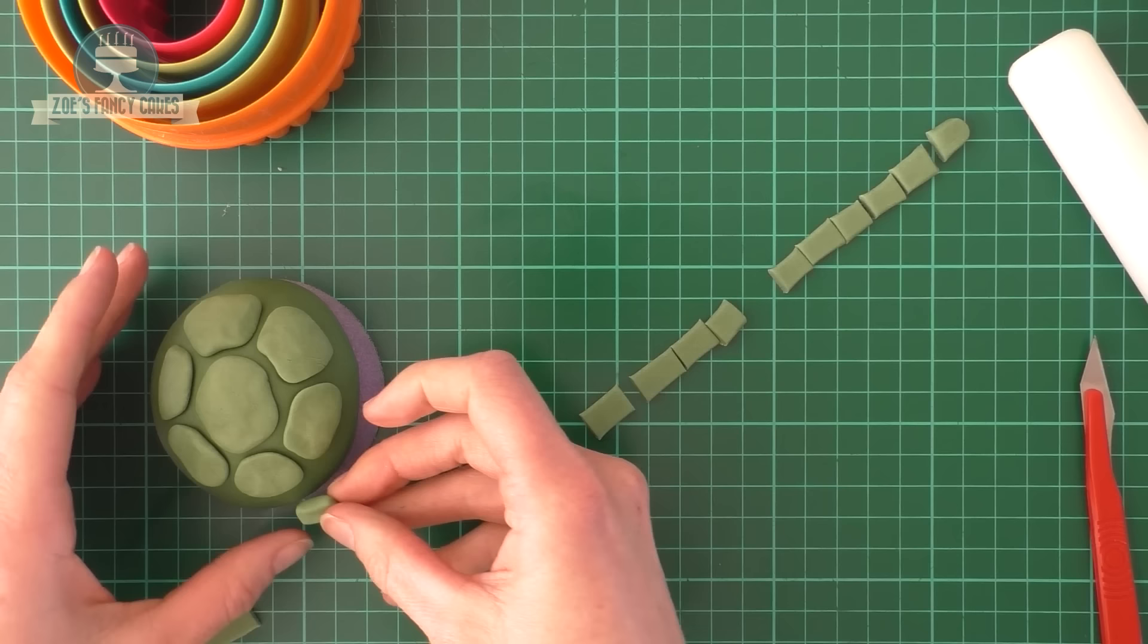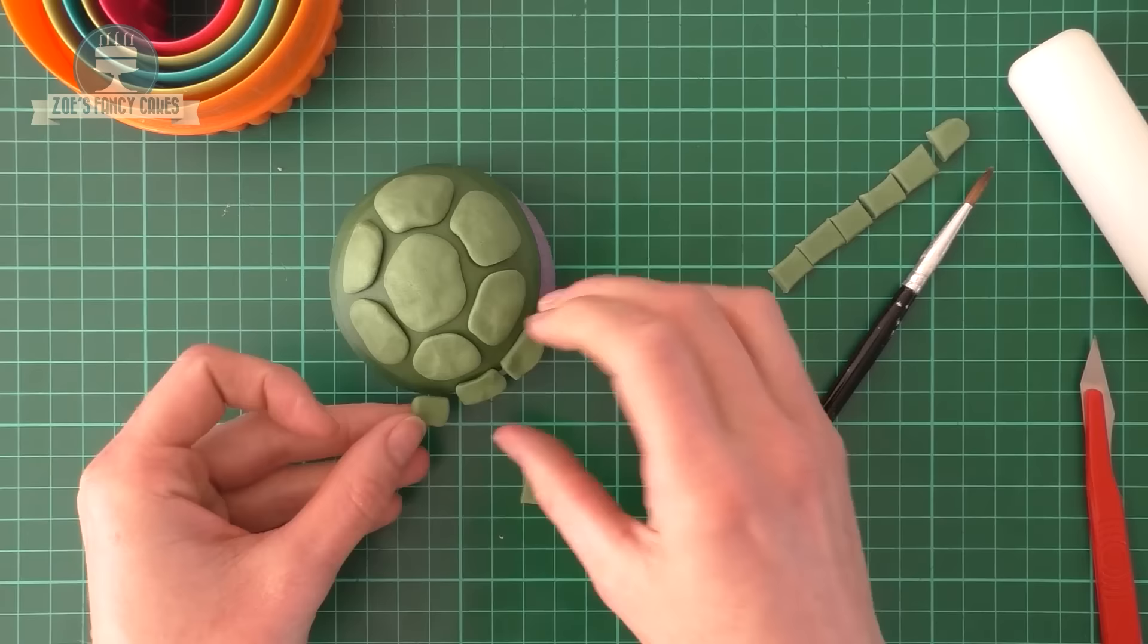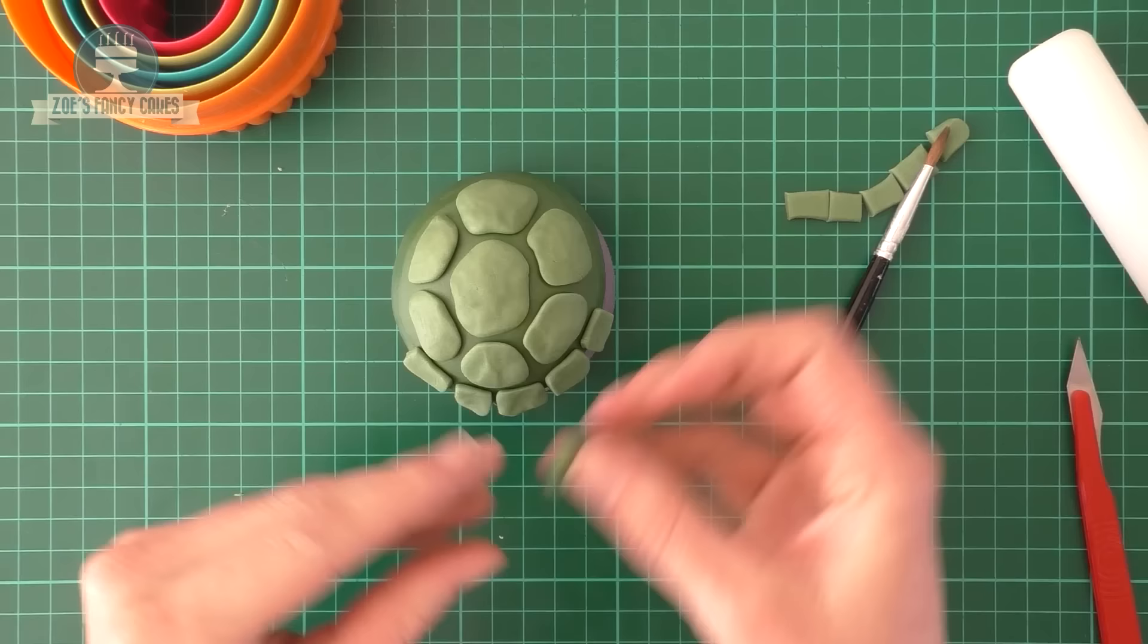With each piece, just sort of round the corners off a little bit so that it hasn't got really sharp edges. Again, if it's not sticking, add a little bit of water around the very edge and we're going to stick these all the way along the edge now. Again, rounding off each corner as you go along, and you don't need to leave too big a gap between each of them.